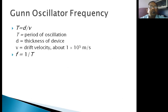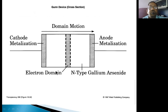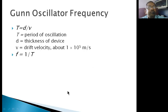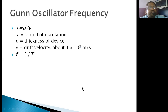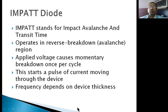The Gunn diode can be used as an oscillator where the frequency f = 1/T, with T being the time period of oscillations. T = d/v, where d is the thickness of the device and v is the drift velocity, which can reach approximately 10⁵ meters per second. The IMPATT diode — Impact Avalanche and Transit Time diode — works on the principle of avalanche and transit time.